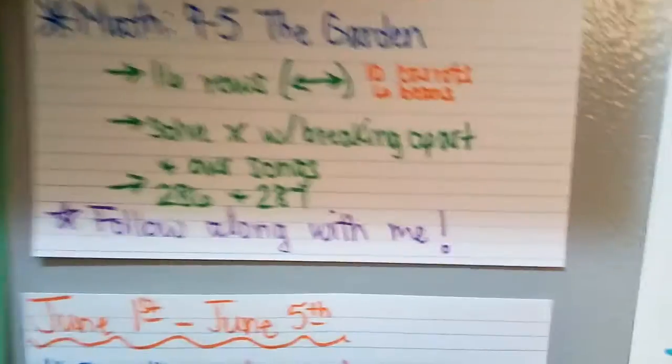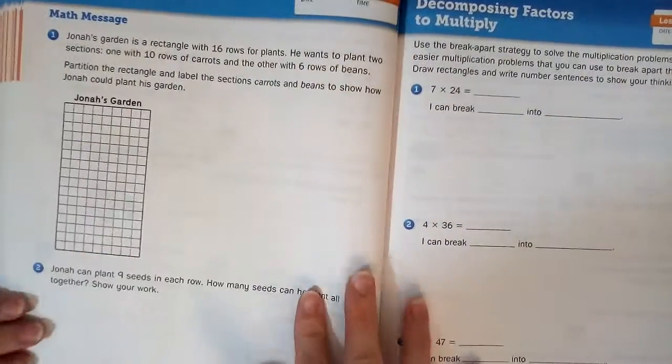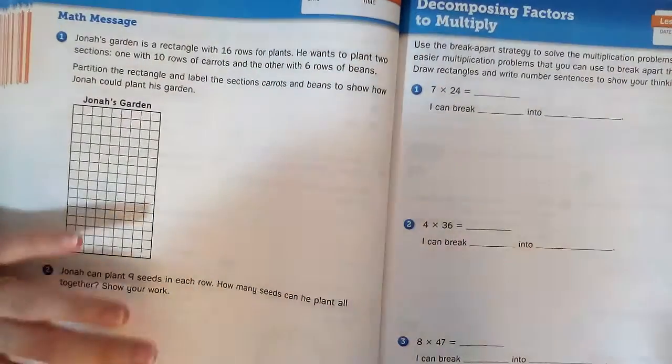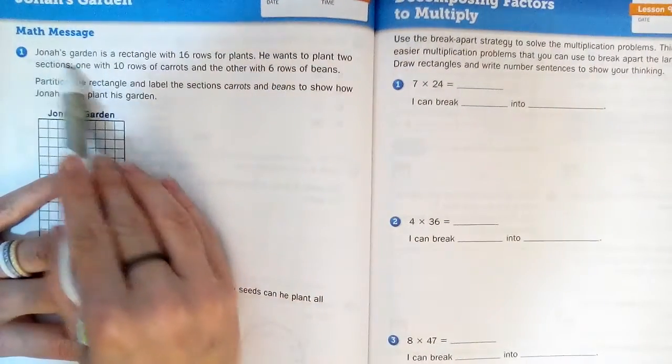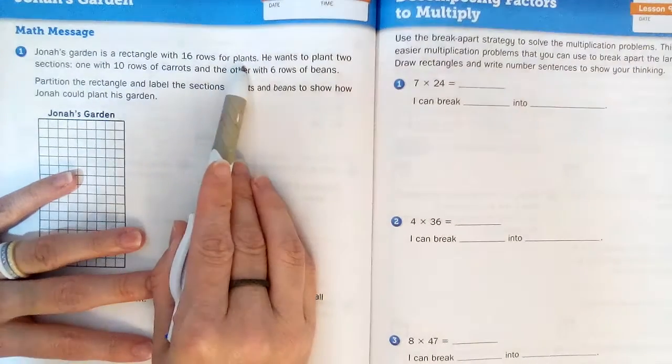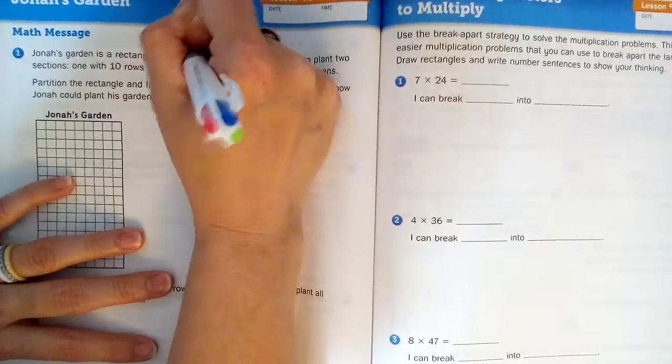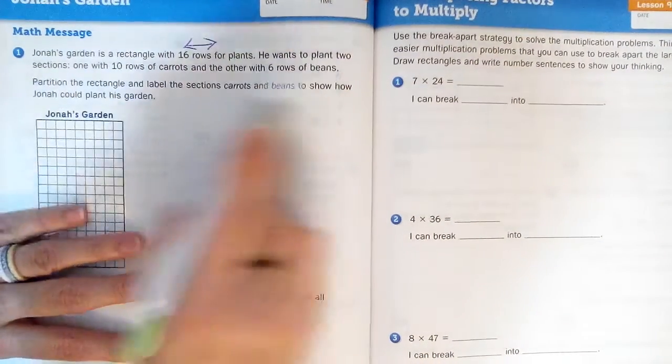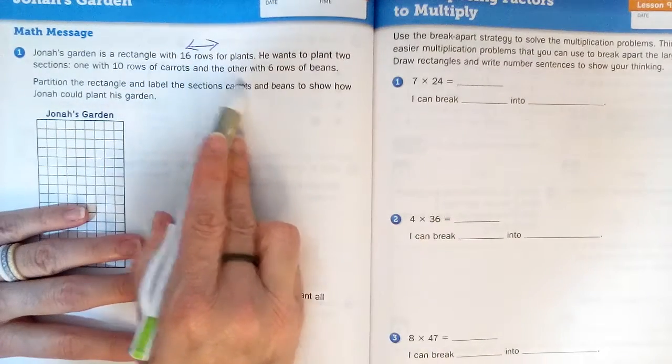So meet me on page 286. Okay, so here's what we've got. We're starting here on page 286 where it says Math Message. Jonah's garden is a rectangle with 16 rows for plants. Rows go left to right. He wants to plant two sections: one with ten rows of carrots and the other with six rows of beans. Okay, so ten carrots, six rows of beans.